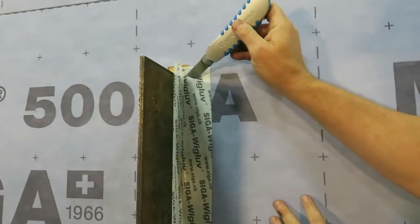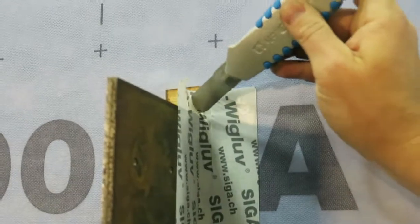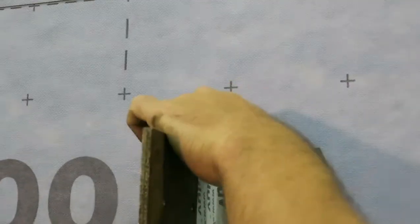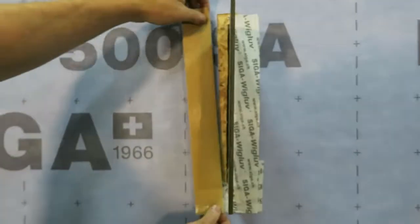Do another 45-degree cut up top, fold the tape down. We're going to repeat the same steps on the other side.